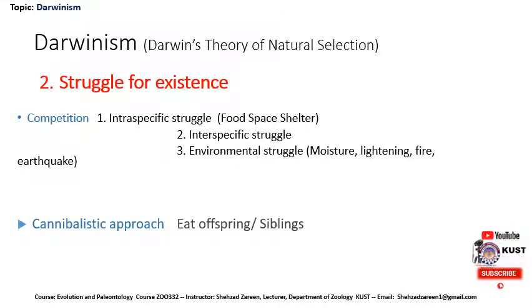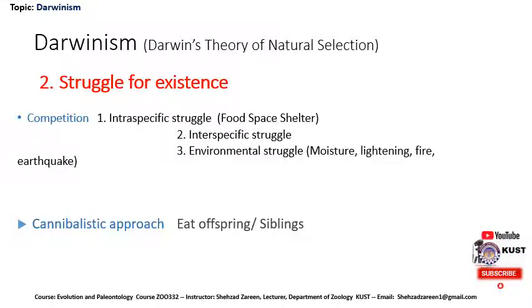The second point of Darwinism is struggle for existence. Struggle is very important for the existence of an animal. There are three basic types of struggles: intraspecific struggle, interspecific struggle, and environmental struggle.